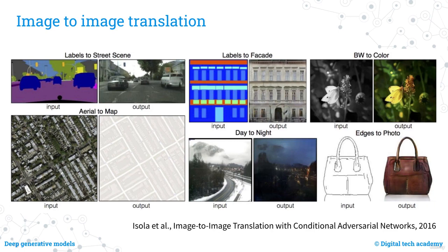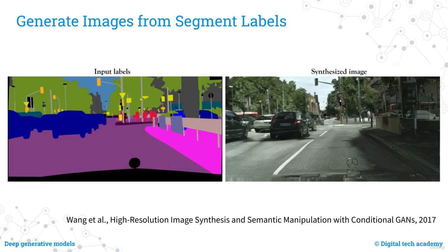If you prefer to draw a sketch of any figure, artificial intelligence can transform it into the corresponding photorealistic image. Generating images from segment labels can be extremely useful in autonomous driving, where many realistic training cases must be generated to train neural networks to drive autonomously. By artificially generating these images, datasets can be created much faster and cheaper than filming them in the field, and it also allows creation of totally improbable scenarios, such as reindeer walking in the middle of a street in New York City.